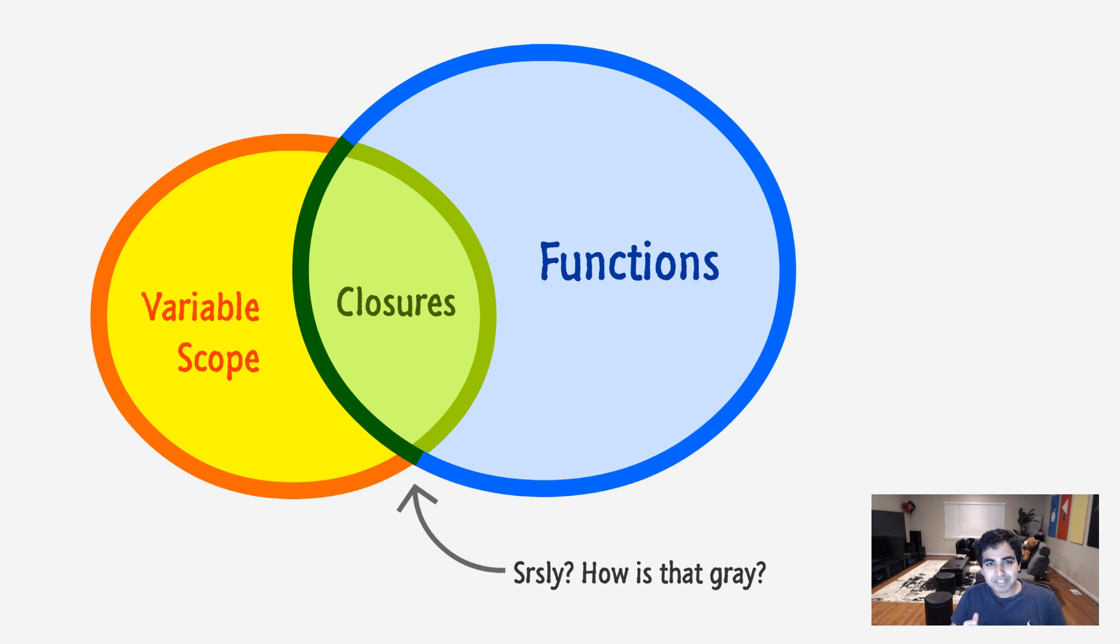So to set some context, I want to say that closures really follow this gray area. They follow this gray area between functions and variable scope. So we all know what functions are, we all know a lot about variable scope, and closures are really the intersection of it. And we'll see some examples where you'll see this diagram come to life through code, but just keep the diagram in mind as we're looking through some of the examples.